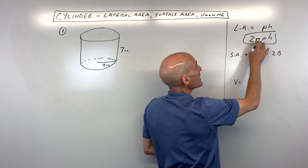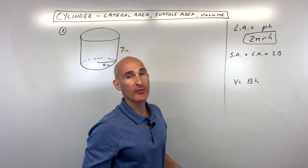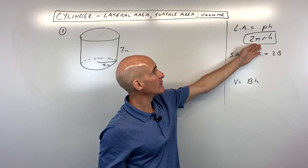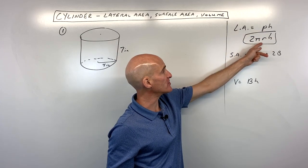So instead of memorizing this formula, you can memorize the formula for a prism, and then just go ahead and substitute in the circle for the perimeter, the circumference.